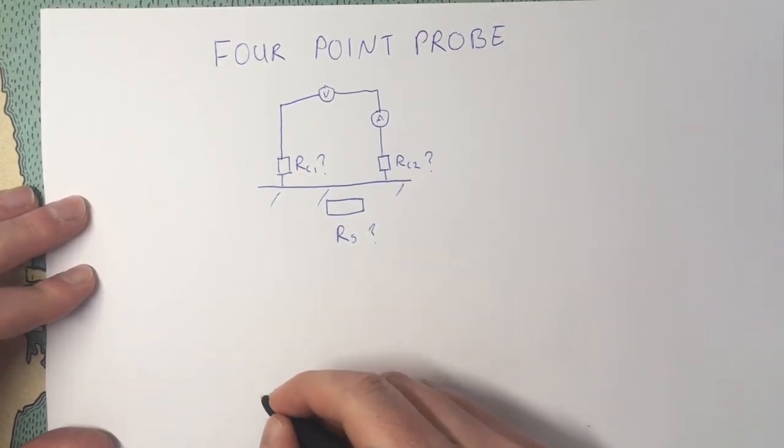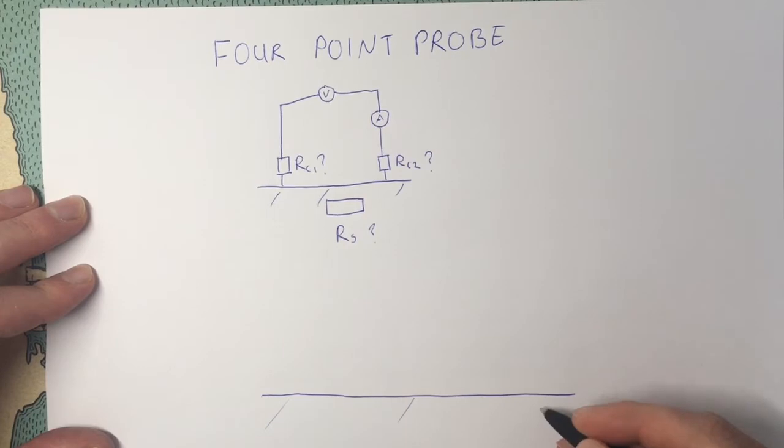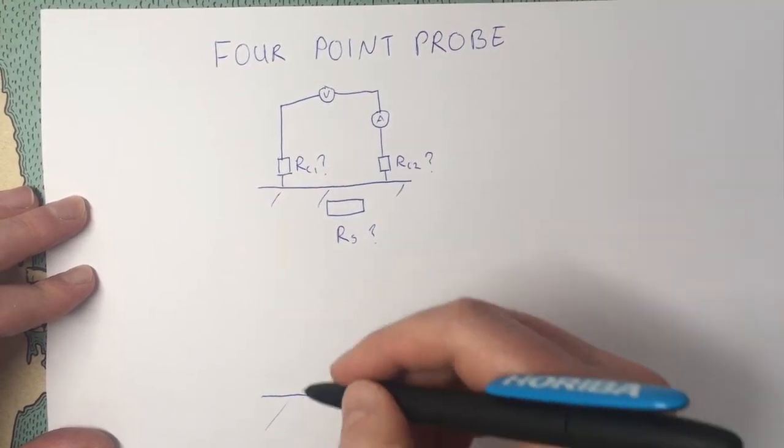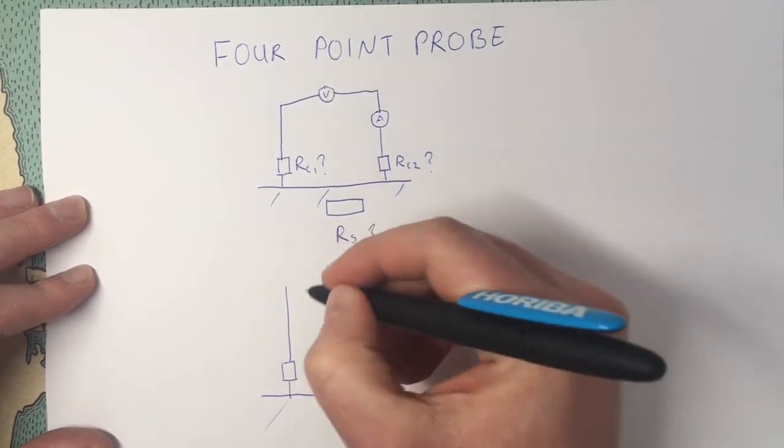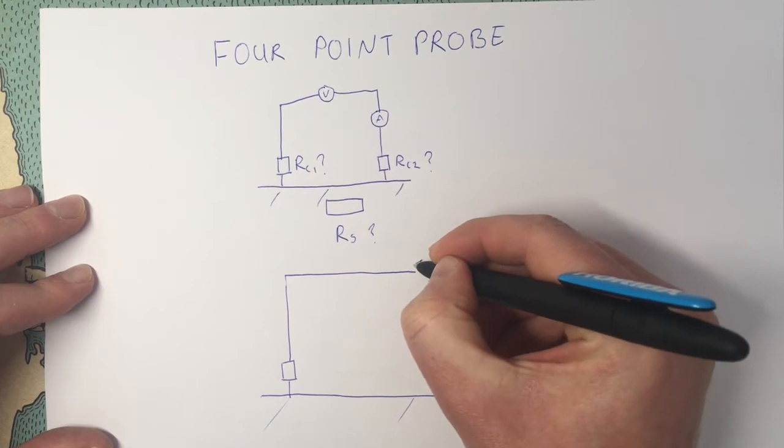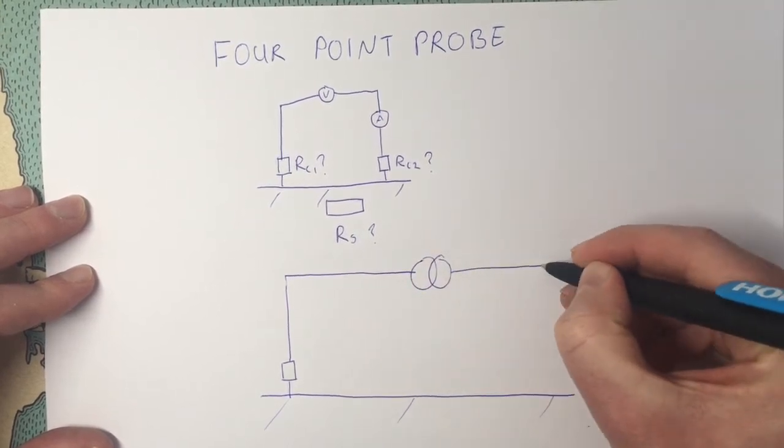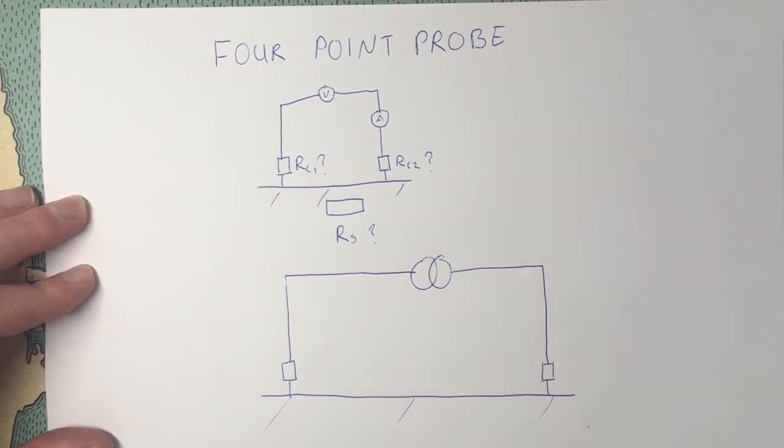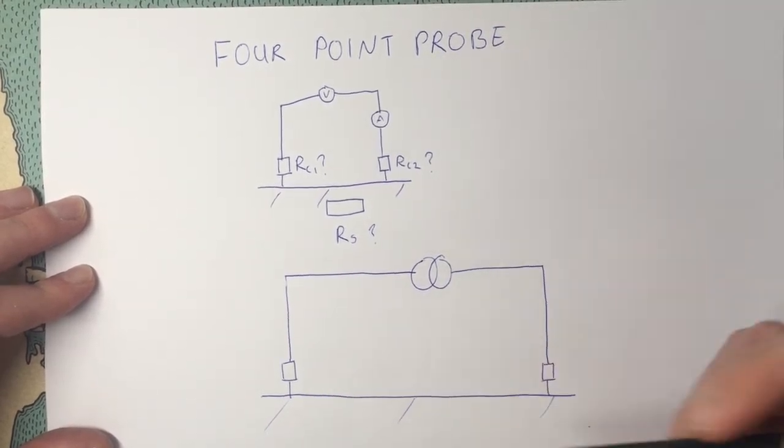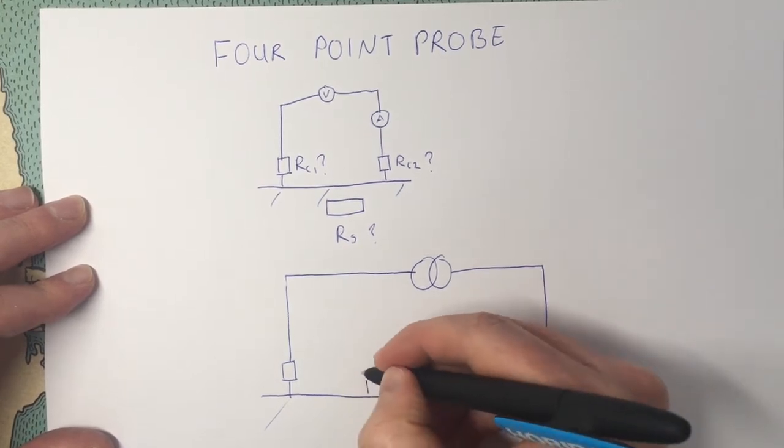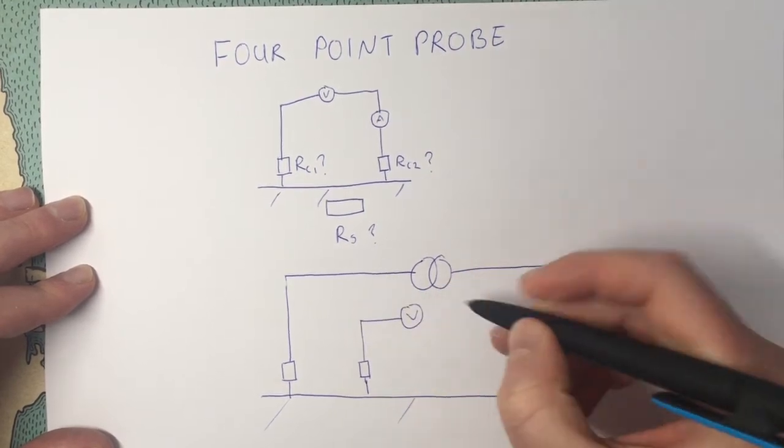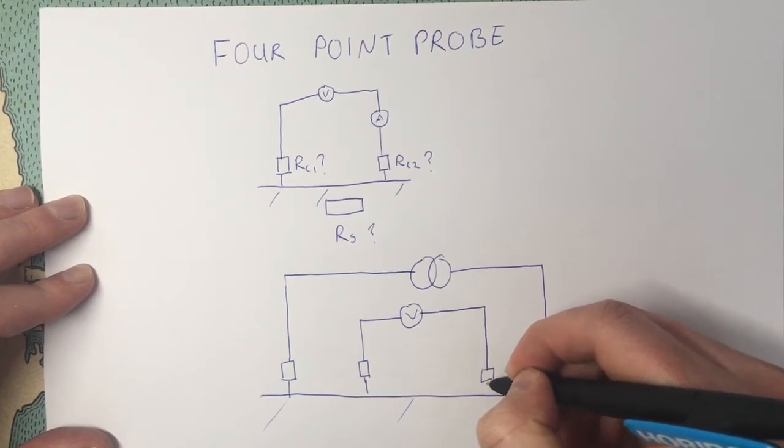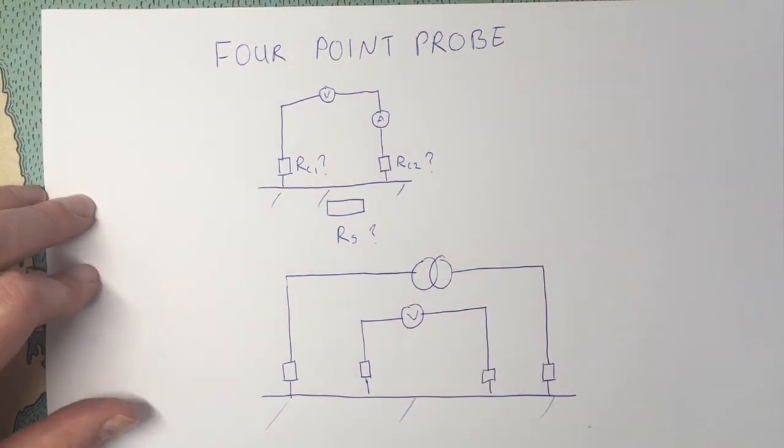So if we imagine taking our sample again, our piece of copper, we are going to have two outer probes. Each of these has a contact resistance, and we are going to source a current through these two outer probes. Then we are going to have two inner probes. Again, each of these has a contact resistance, and we are going to measure the voltage over these two inner probes.